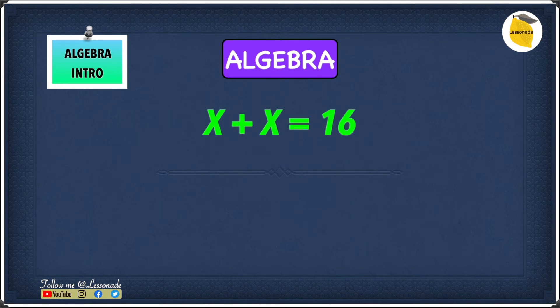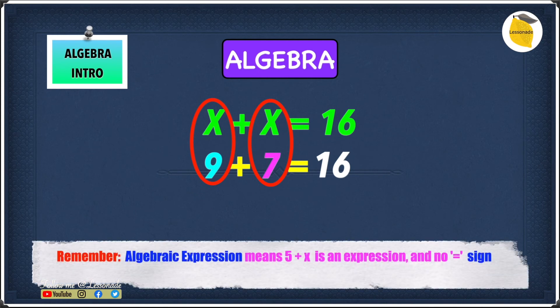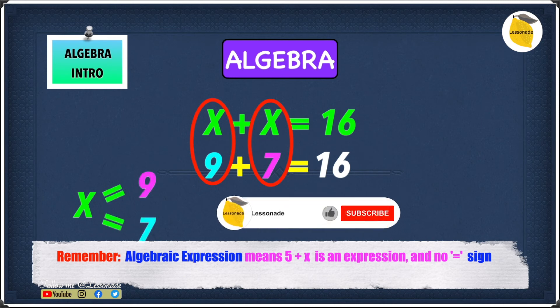So right here we have x plus x equals 16. With this example, you have a lot of combinations for adding two numbers that will equal 16. For example, you can have 9 plus 7, which equals 16. But if you really notice, 9 plus 7 equals 16, you can see that one value is x equals 9, and the other one is x equals 7. So you have 9 as a value for an x, and you have 7 as a value for the other x. So in this case, x has two different values, it has both 9 and 7 as its value in the same problem. And as we said before, this is not right.